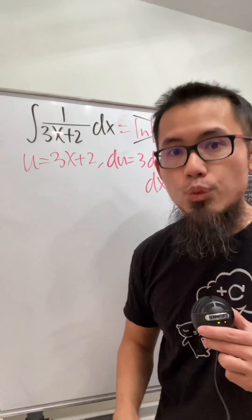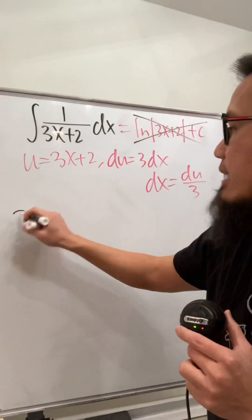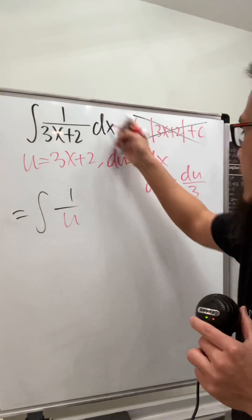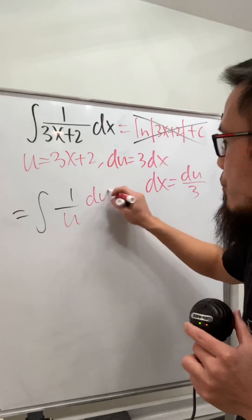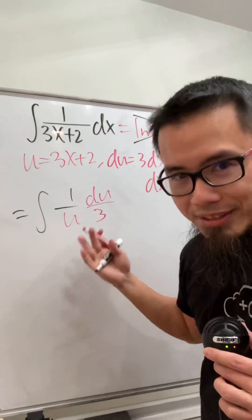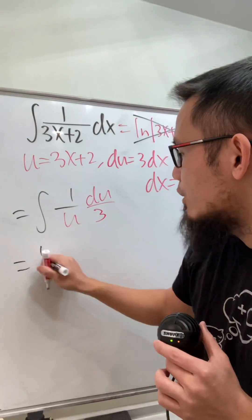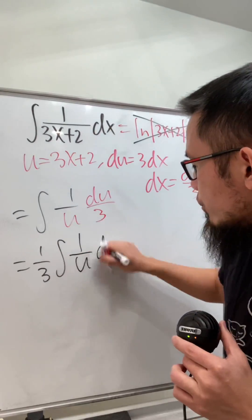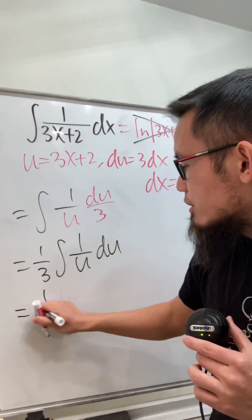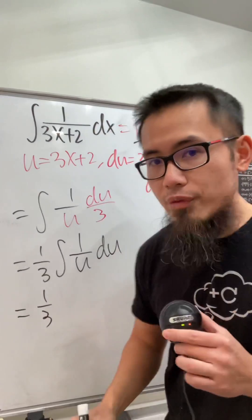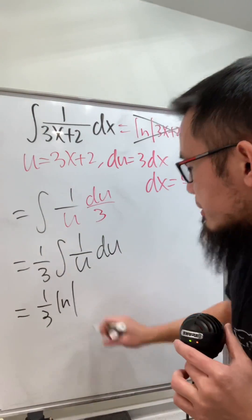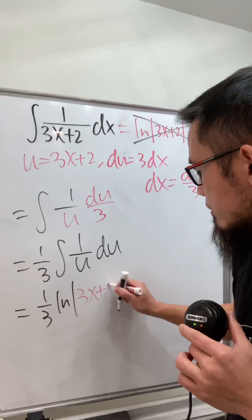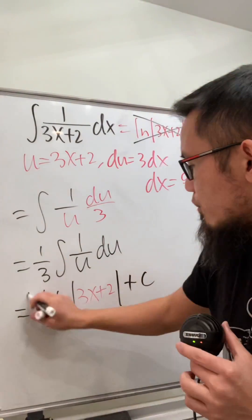We can take this integral to the u world. You will get the integral of 1 over u, and dx is equal to du over 3. We have the one-third, so we can put that to the front. The integral of 1 over u in the u world is just one-third times the natural log of the absolute value of u, and u is equal to 3x plus 2. Don't forget the plus c.